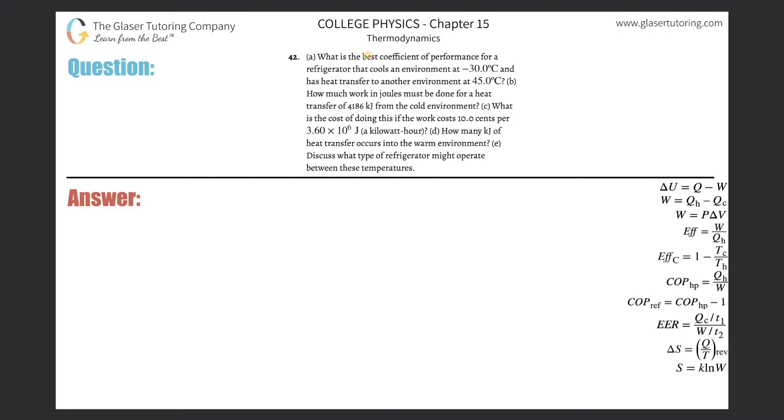Number 42. What is the best coefficient of performance for a refrigerator that cools an environment at negative 30 degrees Celsius and has heat transferred to another environment at 45 degrees Celsius? For letter A, we're going to use this formula that the coefficient of performance will be equal to one, the best coefficient of performance, that is, is equal to one divided by the Carnot efficiency. Check out number 37 for how I arrived at this formula.